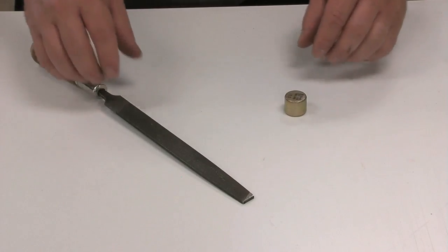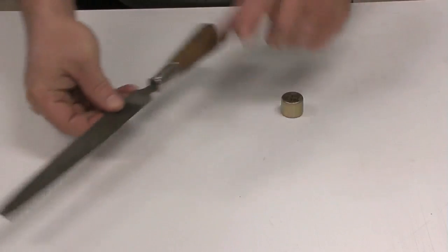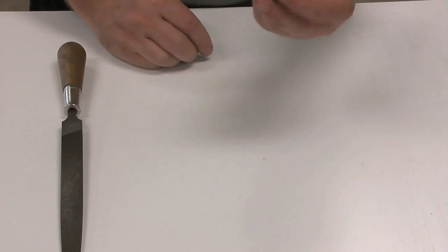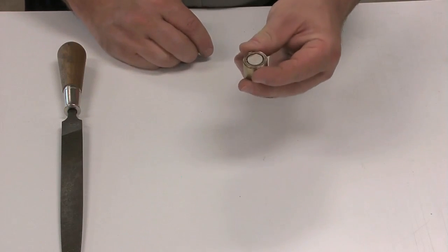We're going to use two primary tools: a hand file, make sure we have a handle on it, and a magnet. This is just a little magnet taken from a speaker.